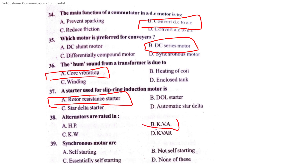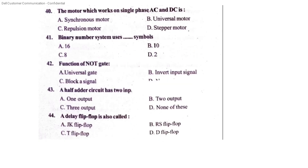Alternators are rated in KVA. The synchronous motor is not self-starting. The motor which works on both single-phase AC and DC is the universal motor. The binary system uses base 2.